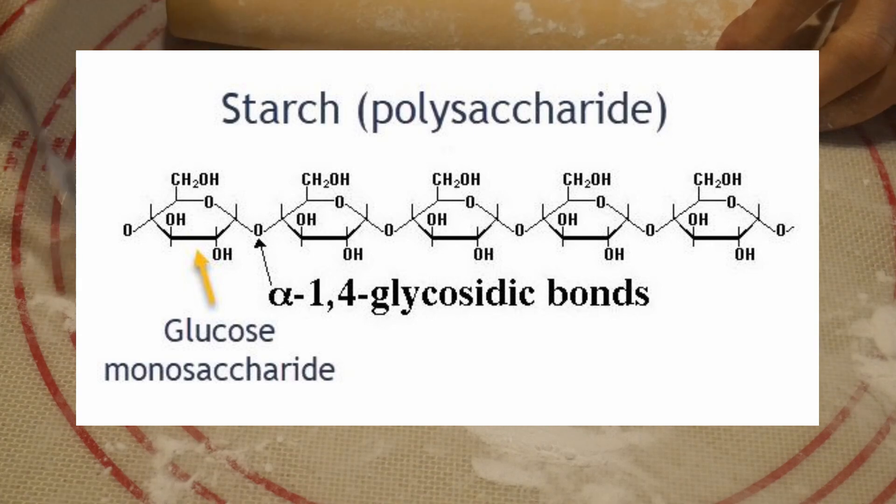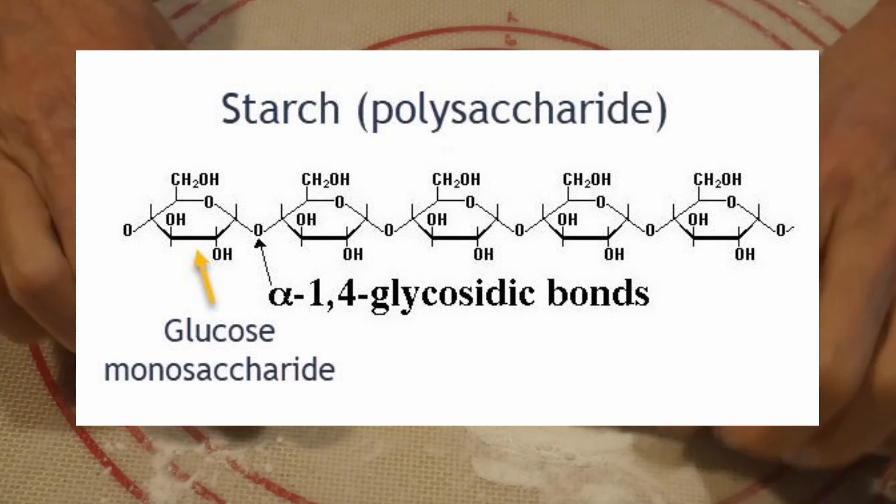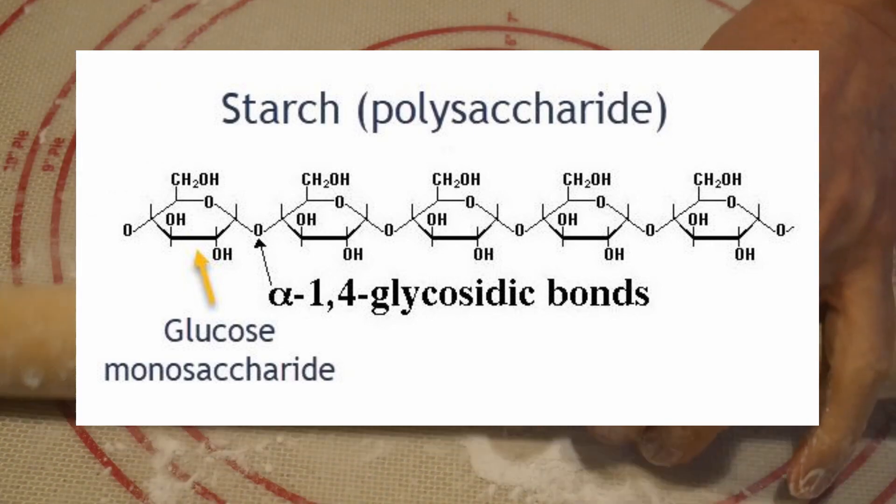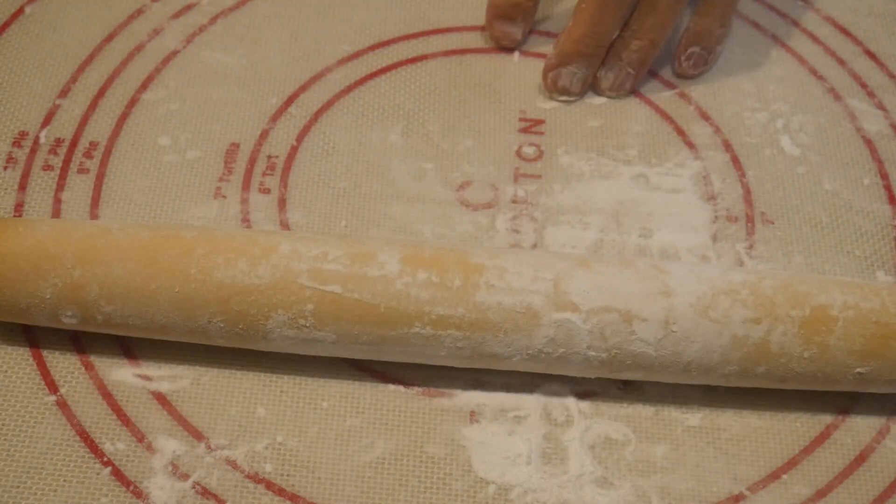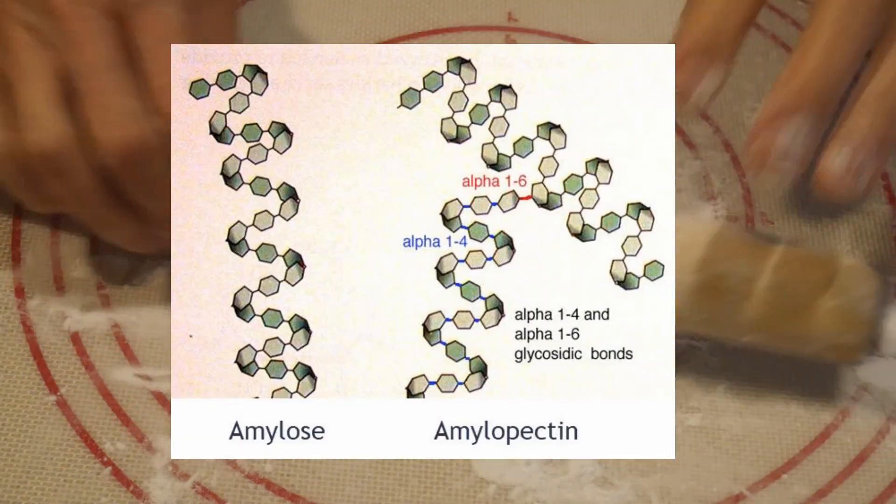These glucose are known as monosaccharides. They are the same glucose that we refer to as blood sugar. A starch contains two different types of polysaccharide.